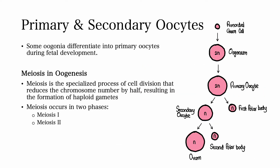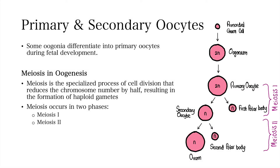Some oogonia differentiate into primary oocytes during fetal development. This involves meiosis. Meiosis is the specialized process of cell division that reduces the chromosome number by half. This results in the formation of haploid gametes. Meiosis occurs in two phases: meiosis I and meiosis II.